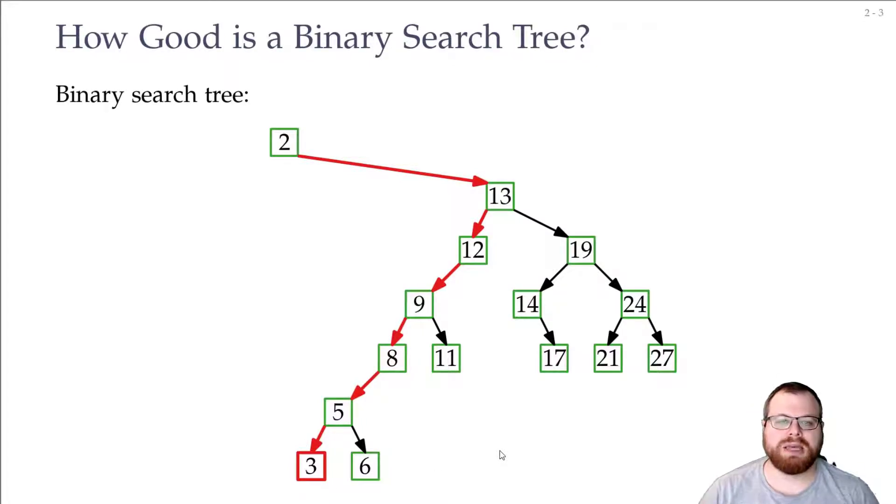Now if I take any binary search tree and I want to do a query, the worst case is that I take linear time. So the worst case query time of any binary search tree is theta of n.